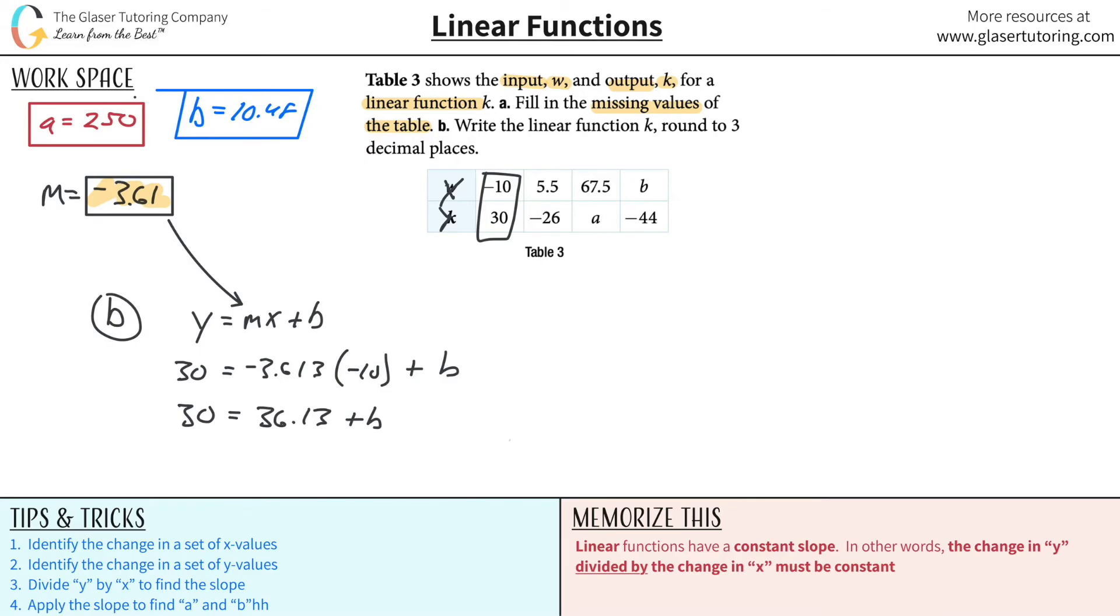So it'll really be 36.129 plus b. Because I'm not writing the exact value out in terms of all the decimal places. So now all we have to do is subtract this value on over to the left-hand side. And then we'll get the y-intercept. And let's see what it is. So it's basically going to be 30 minus 36.129. And we get about negative 6.129. Fantastic. Now we have everything we need to write the linear equation.